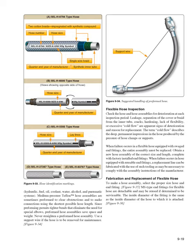Flexible hose inspection: check the hose and hose assemblies for deterioration at each inspection period. Leakage, separation of the cover or braid from the inner tube, cracks, hardening, lack of flexibility, or excessive cold flow are apparent signs of deterioration and reason for replacement. The term cold flow describes the deep, permanent impressions in the hose produced by the pressure of hose clamps or supports. When failure occurs in a flexible hose equipped with swaged end fittings, the entire assembly must be replaced. Obtain a new hose assembly of the correct size and length, complete with factory-installed end fittings. When failure occurs in hose equipped with reusable end fittings, a replacement line can be fabricated using tooling that complies with the assembly instructions of the manufacturer.